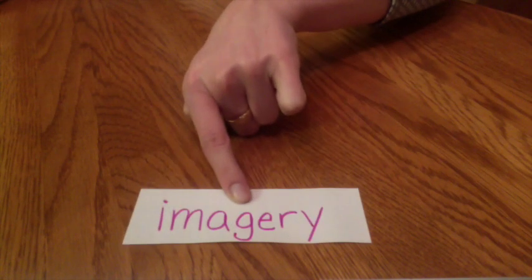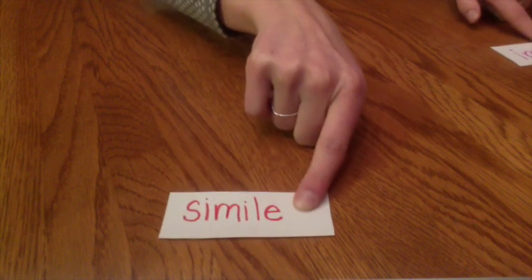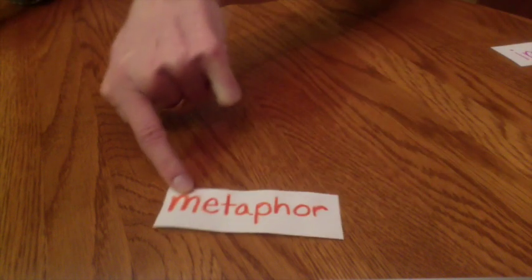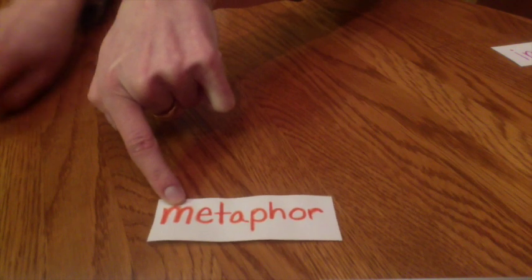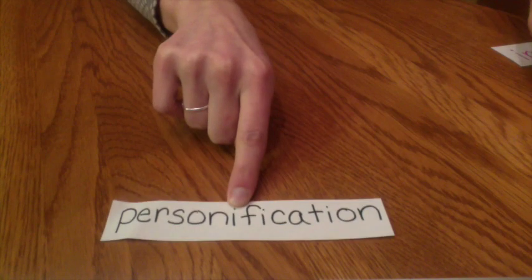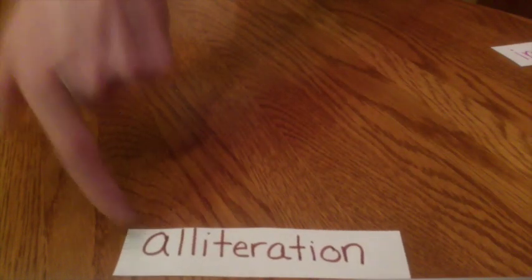So to recap, our poetry terms are: onomatopoeia, imagery, simile, metaphor, personification, and last but not least, alliteration. These are our terms for poetry. I hope you got it all, and I'll see you tomorrow.